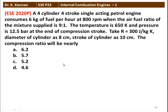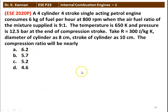The next question from the 2020 question paper: a four-cylinder, four-stroke single-acting petrol engine consumes 6 kg of fuel per hour at 800 rpm when the air fuel ratio of the mixture supplied is 9 to 1. The temperature is 650 Kelvin and pressure is 12.5 bar at the end of the compression stroke. Take gas constant R equal to 300 joules per kilogram Kelvin, diameter of the cylinder 8 centimeter, stroke of the cylinder 10 centimeter. The compression ratio for the engine is nearly 6.2, 5.7, 5.2, or 4.6. The correct answer is 6.2.